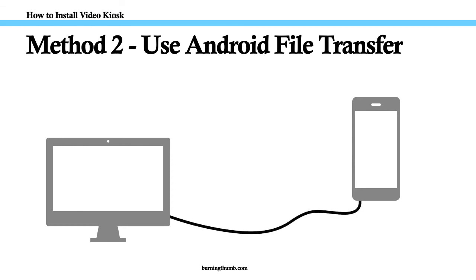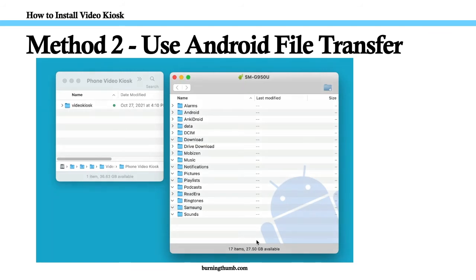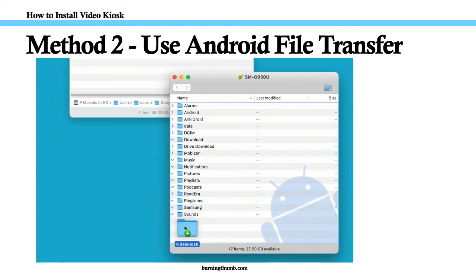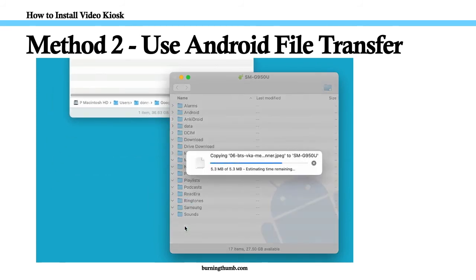To use Android File Transfer, you'll need a USB cable and you'll need to install Google's Android File Transfer on your computer. Then connect your Android device to your computer using the USB cable. Android File Transfer will launch automatically. Browse your computer for the folder you want to copy over and drag it to the Android File Transfer window. Please note that some USB cables do not support file transfer, so this method might not work for you.